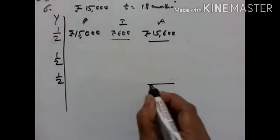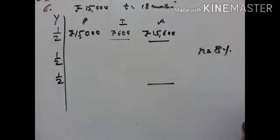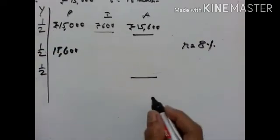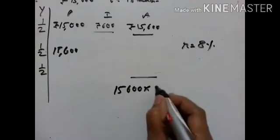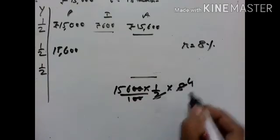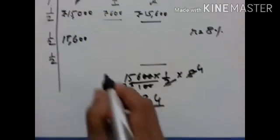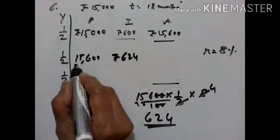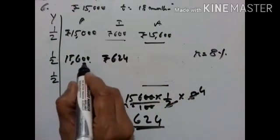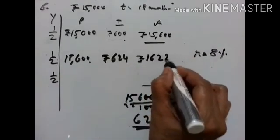Now we have to find the amount at the end of 18 months. Rate is equal to 8%. Rs. 15,600 becomes the principal for the second half-year. P × T × R upon 100, time is half a year. Interest is equal to Rs. 624, which is the interest for the second half. So the amount becomes Rs. 15,600 plus Rs. 624, equal to Rs. 16,224.